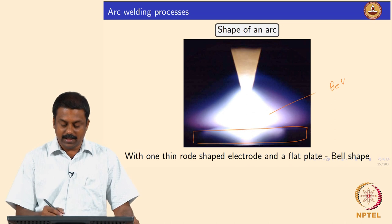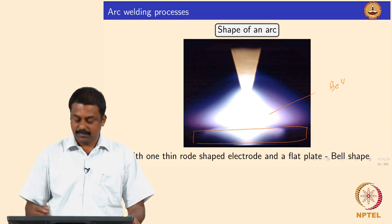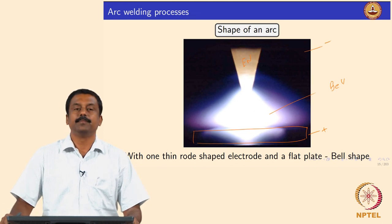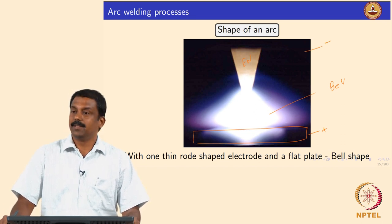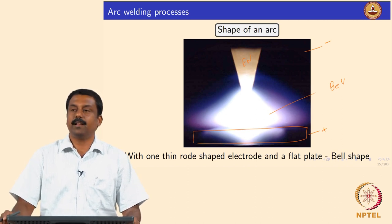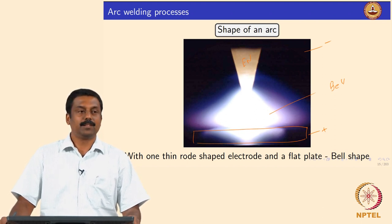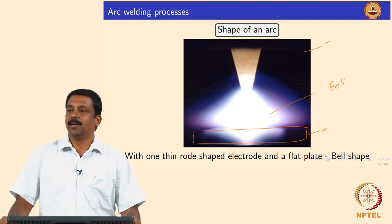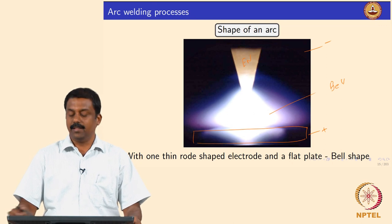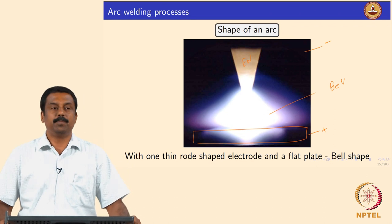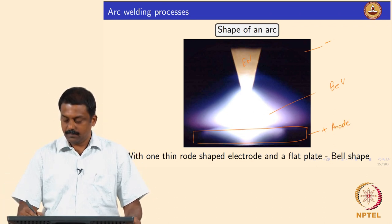For example, if the electrode is negative — this is the positive terminal and this is the negative terminal — then the cathode in this case is the tungsten. The cathode's main function is to emit electrons. Once tungsten is made negative, the electrons would be emitted from the electrode and travel towards the base material, which is the positive anode.